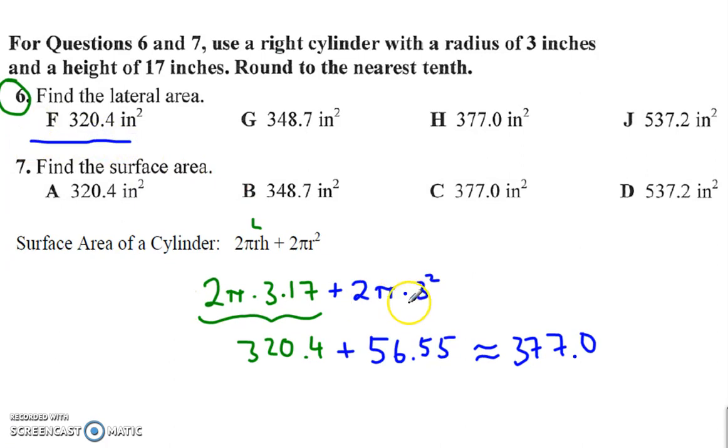And then add in the two bases. Two pi r squared is approximately 56.55. Add those together, we get about 377.